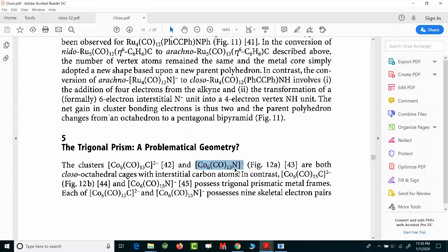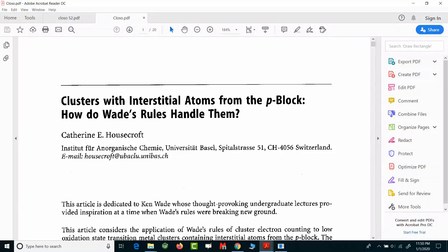This is the reference. You can see this is a chapter in one of the very good journals, a very good publisher, Springer. Here they have mentioned that the clusters, this particular cluster Co6(CO)13C2- and Co6(CO)13N-, are both closo octahedral cages. If you want to see the reference, this is actually written by one of the very famous authors, Kathleen Housecraft, for whom you might be aware there is a very famous book also named Housecraft.